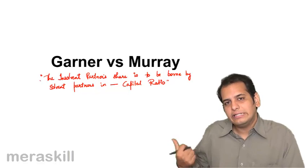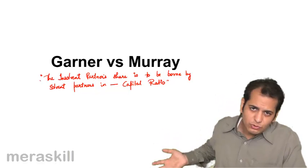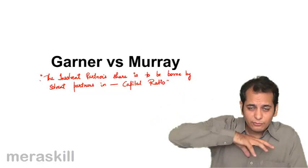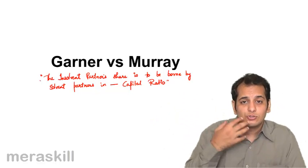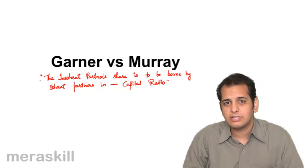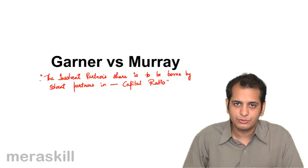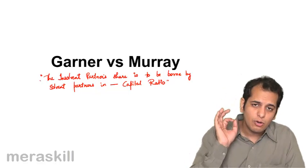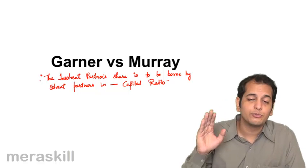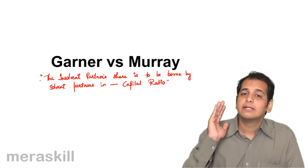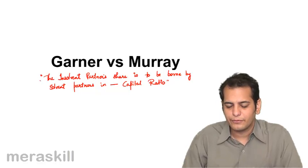Whatever money the insolvent partner was to bring in, both solvent partners — Garner and Murray — have to bring in, but in the capital ratio. Not equally, not in the profit sharing ratio, but in the capital ratio.